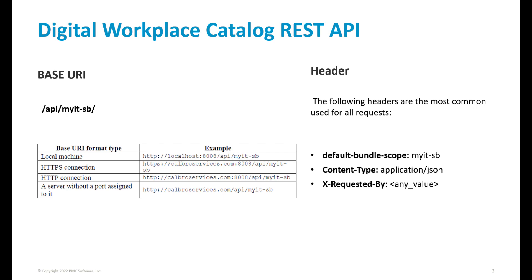Call the API endpoint from the fulfillment application host URL. If the host URL includes a port number, include the port number in your request. Here we can see some examples of the base URI. Also, the default headers — unless an API endpoint requires a different header, the following headers are required for order requests: the default bundle scope, content type, and xrequestedby.